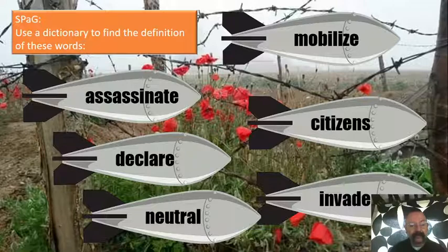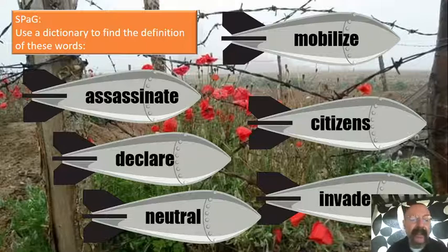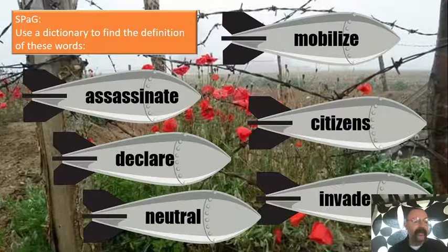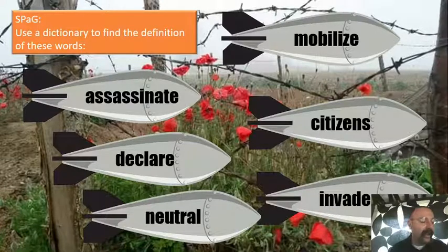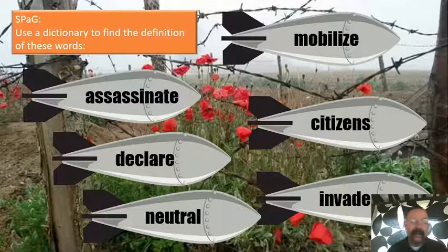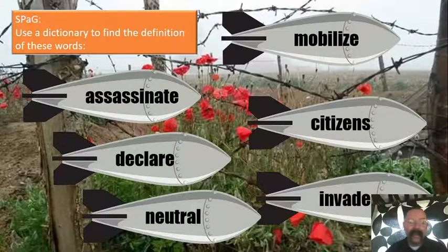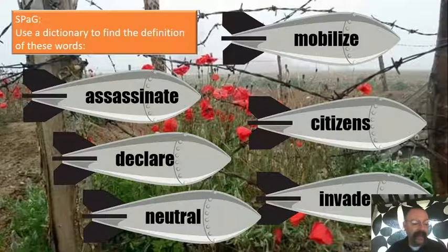Pause the video and see what you can find out. Hopefully you've had a look to find a definition of those words. 'Assassinate' means to murder for political or religious reasons.